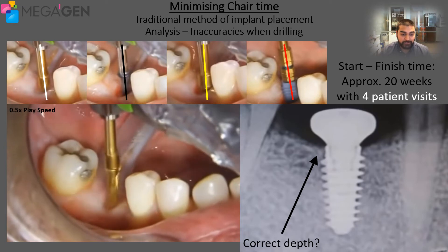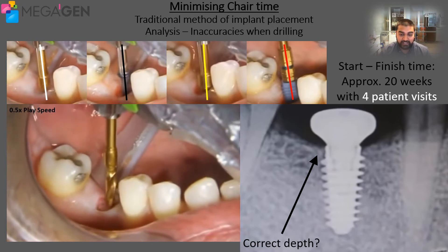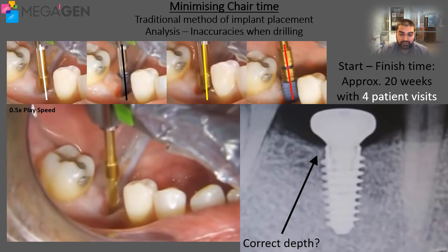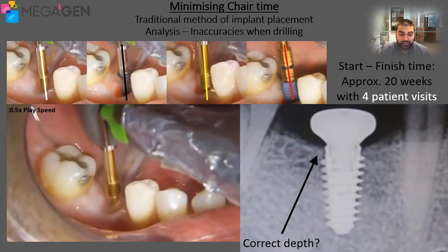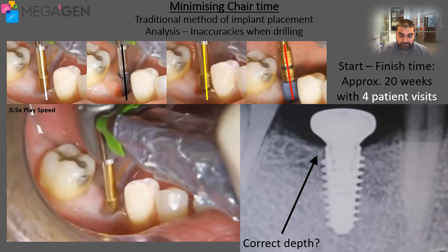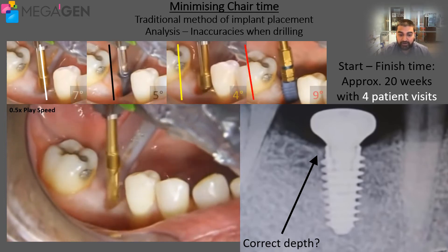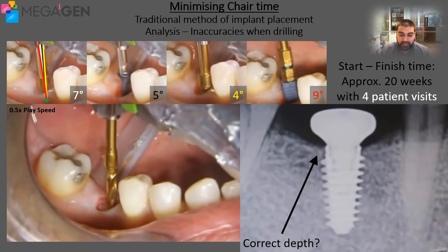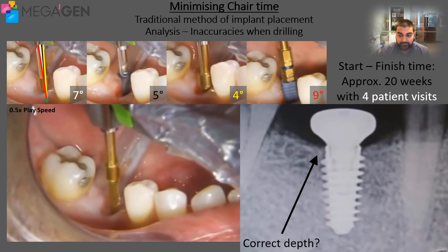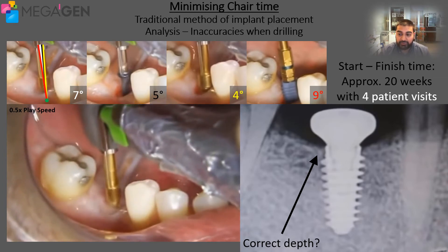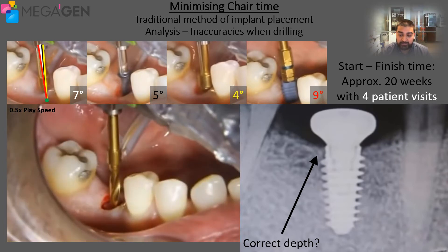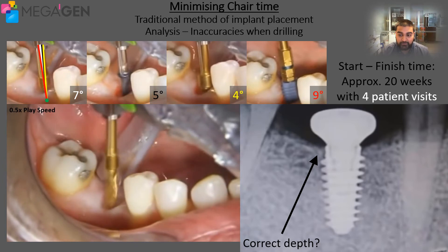I have slowed down the video in order to better see this drifting action taking place, and I also took some screenshots at different stages to demonstrate the potential for angular deviation with the natural arc of a person's wrist movement. One final thing we see from the periapical x-ray provided was that the implant has not been placed subcrestally, which is something that guided surgery can also help with. From start to finish, the approximate time taken to perform surgery on this patient was approximately 20 weeks, and this involved four patient visits.